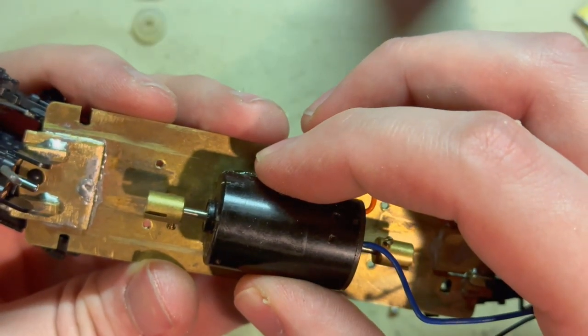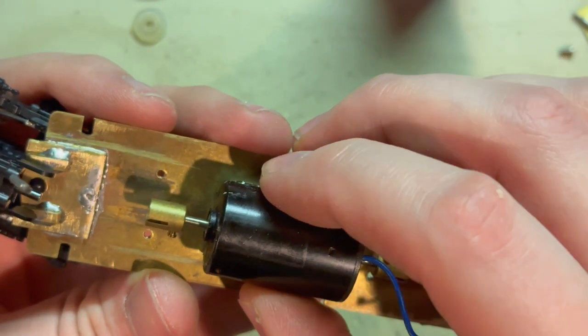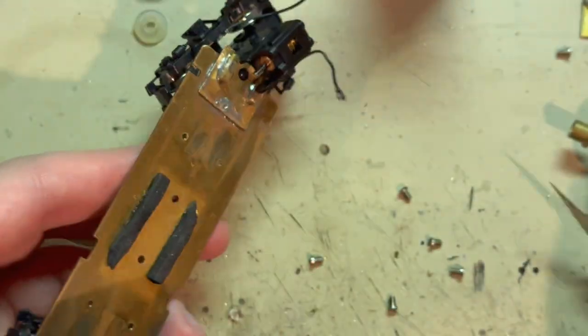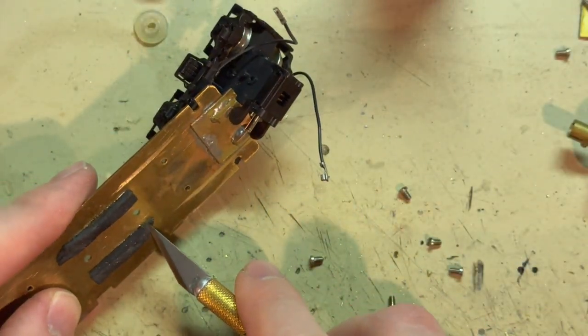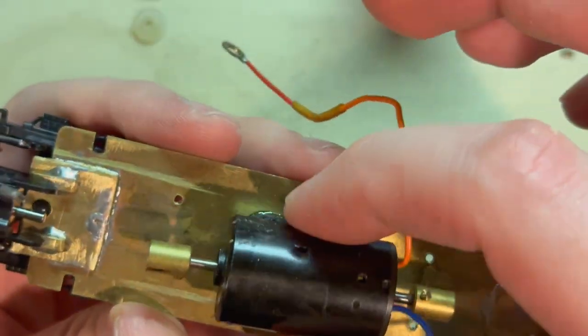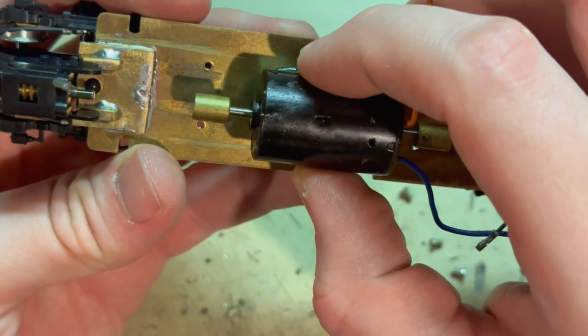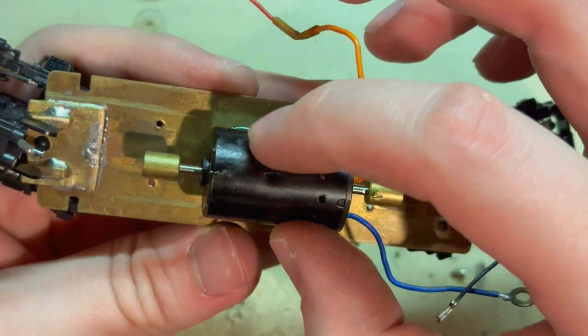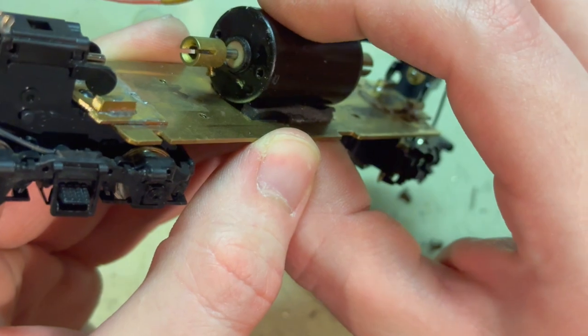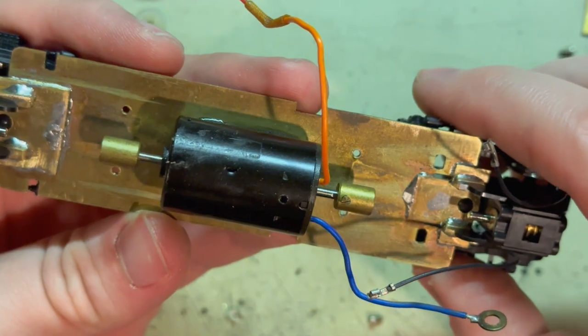I'll just put a bead along there. Careful not to touch it with my skin because it'll stick instantly. Got to make sure that holds the motor perfectly centered. Otherwise, it won't fit right with the body. Okay, that's holding the motor. It's just ever so slightly suspended above the brass. So, that'll help with vibration dampening. Make it run that much quieter.